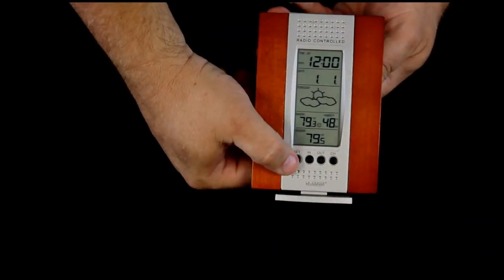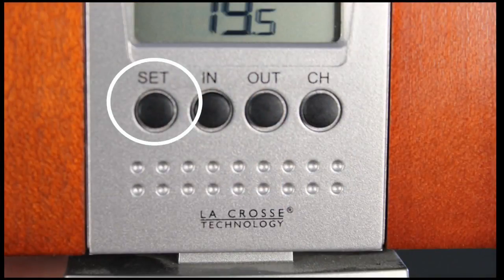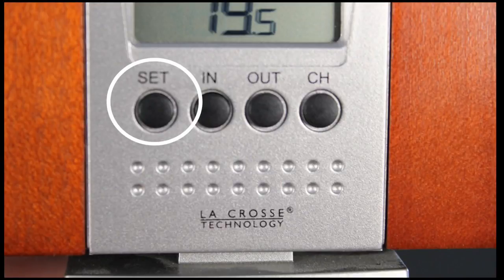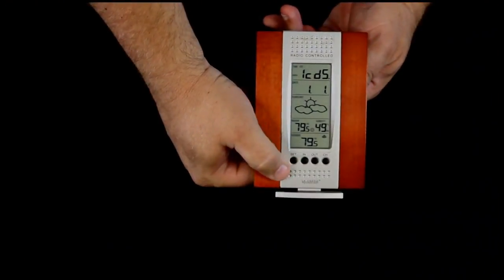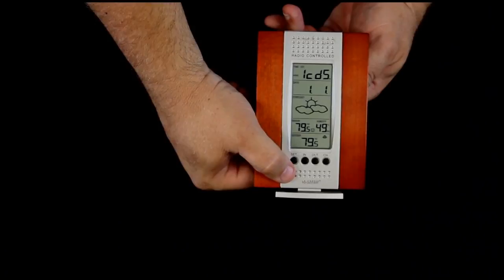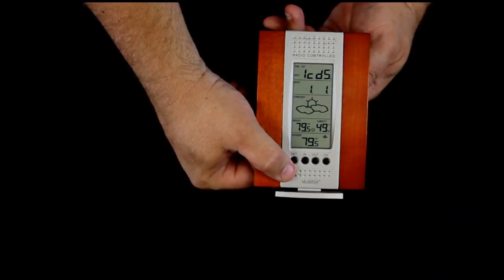To set the unit up, we push the set button and hold it. The time will turn into the letters LCD and a flashing number. The flashing number can be changed to give a more or less dense display.